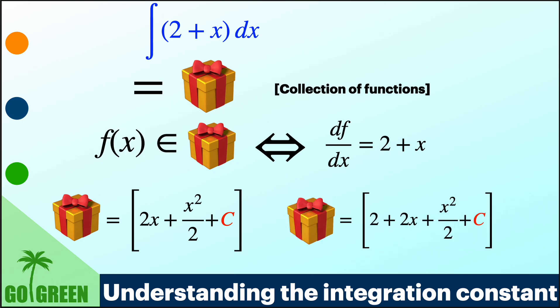And in the second solution, we have written 2 plus 2x plus x squared by 2 plus C. Again, we have to take C to be all possible real numbers and then collect all the functions inside the second box.